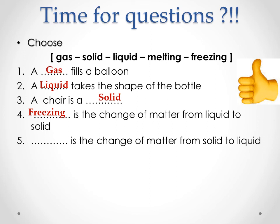Number five: what is the change of matter from solid to liquid? Take ice from the freezer and leave it for some time — it turns to liquid again. This process is called melting. So melting is the change of matter from solid state to liquid state.